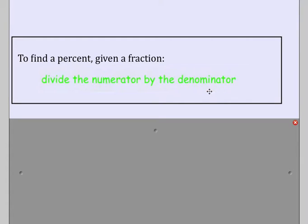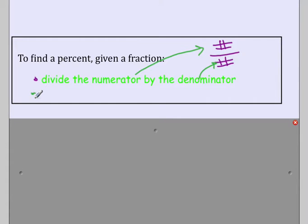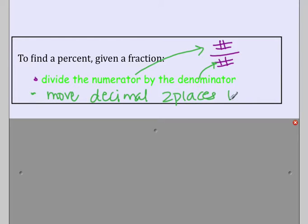In order to find a percent given a fraction, what you need to do is take the numerator and divide it by the denominator. If you have a fraction, the numerator is what is on top and the denominator is what is on the bottom. Once you have divided the numerator by the denominator, in order to make it a percent you just need to move the decimal two places to the right, and that will give you your percent.